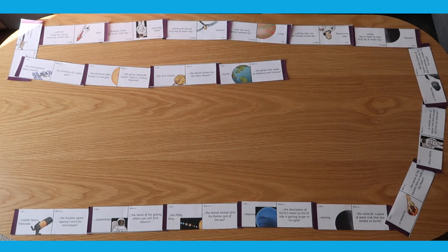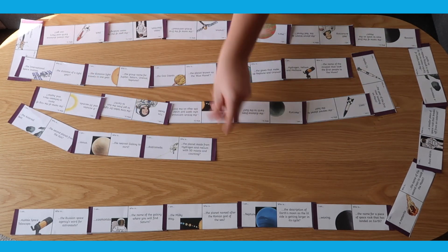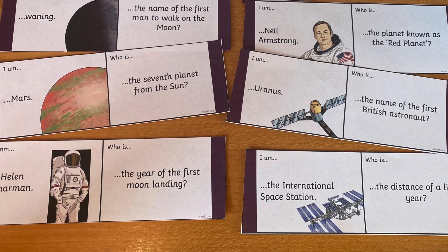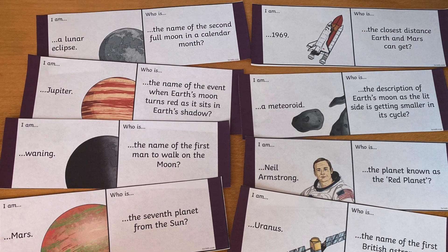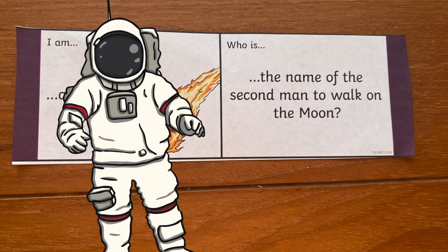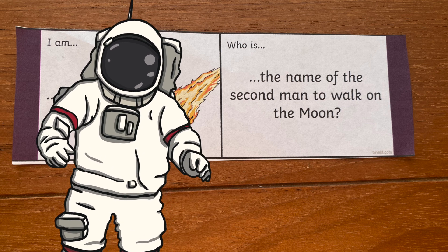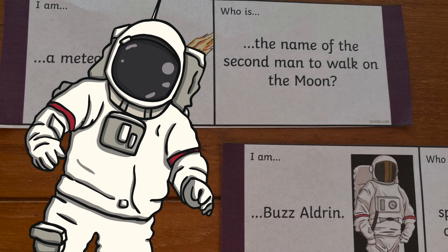Here we have a Key Stage 2 space loop cards. These are perfect for the whole class to use towards the end of the topic. Another way of using loop cards like these would be to use them at the start of a research lesson. In pairs, the children have to complete the loop, however most of the knowledge is unknown to them, so when they come up with a question they're not sure of the answer to, they have to research that particular area before they can complete the loop. This could of course be turned into a competitive race between the class to see which pair can complete the loop first.